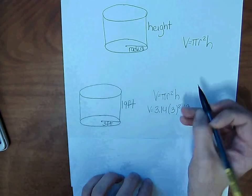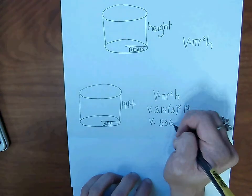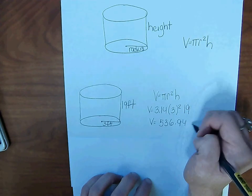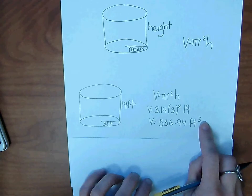So volume equals 536.94 cubic feet, or feet cubed. Volume is always units cubed.